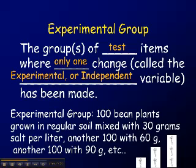For our example, the experimental group is actually several sets of bean plants. Maybe 100 bean plants grown in regular soil mixed with 30 grams of salt per liter. Another 100 plants with 60 grams of salt per liter. Another 100 plants with 90 grams, and so on. So you have different amounts of salt in your experimental group. This way you can determine the effect of a certain amount of salt on the plants.